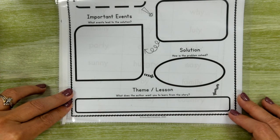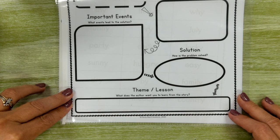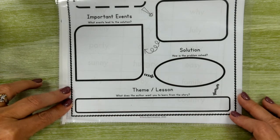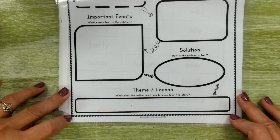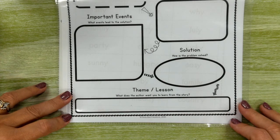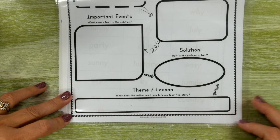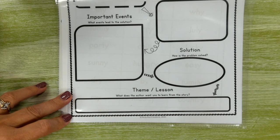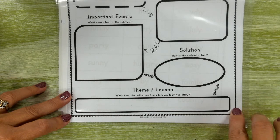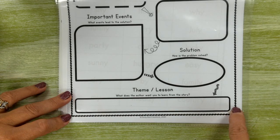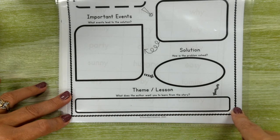Down at the bottom it says the theme or lesson - what does the author want you to learn from this story? This might mean something different to each person. There's actually more than one lesson to be learned in this book, so I'm going to grade pretty liberally on this one because I think I'm going to get a lot of different answers and that's okay.